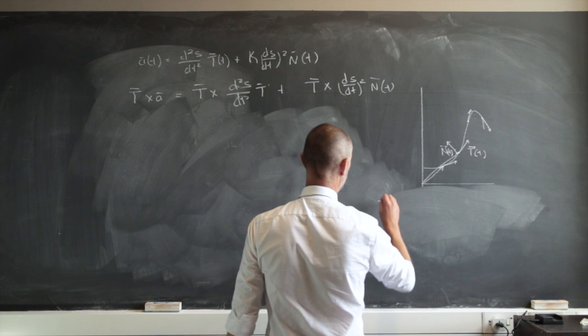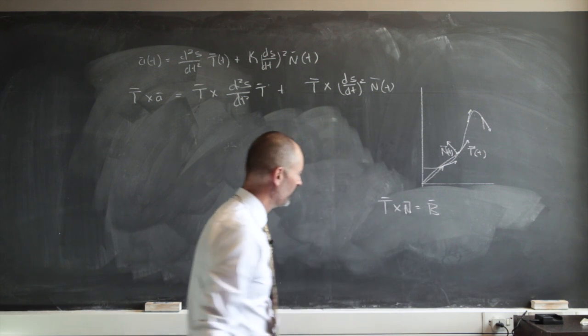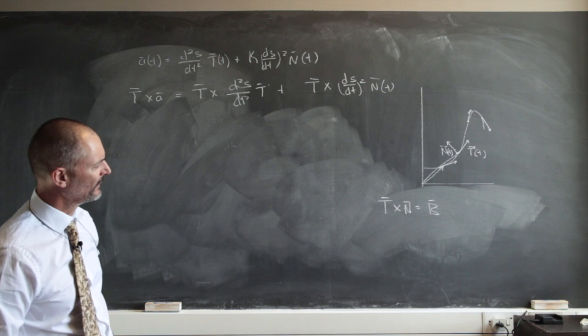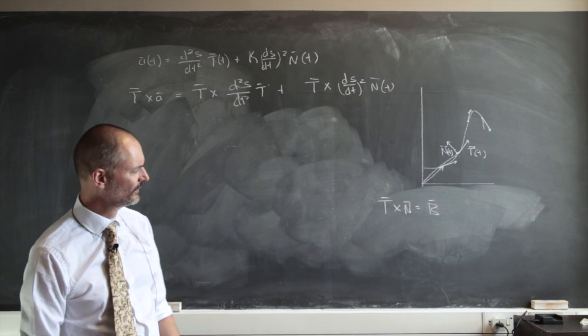And what is T cross N? T cross N, well we know that's B. We know that's B. But that's a unit vector cross a unit vector, that's going to be another unit vector.